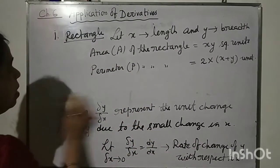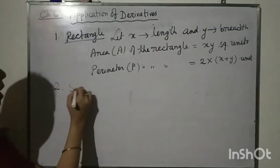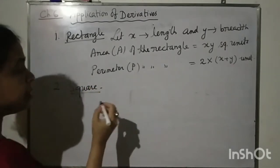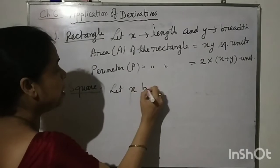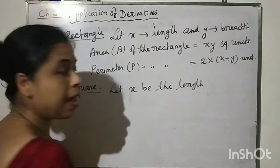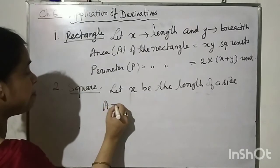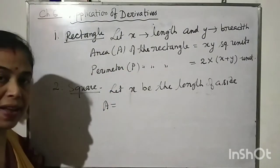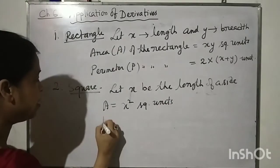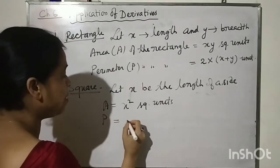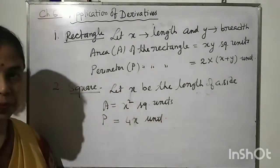After the rectangle, let us consider a square. In a square, all sides are equal. Let x be the length of a side. Then the area A is given by x squared, in square units. The perimeter P is given by 4x, which is the total length of all boundary lines.